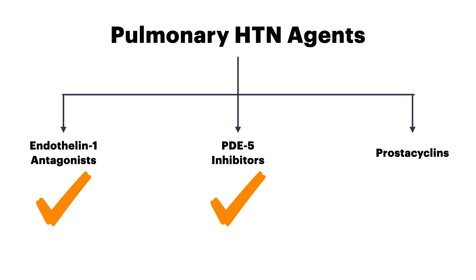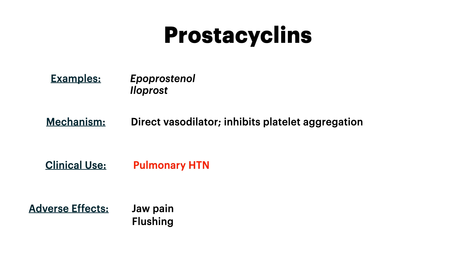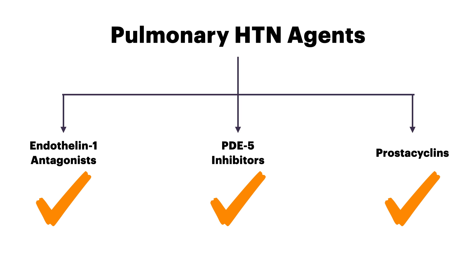Prostacyclins are our last category of pulmonary hypertension agents — honestly lower yield compared to endothelin-1 blockers and PDE5 inhibitors. The examples are epoprostenol and iloprost. They all have "prost" in the name, so you'll remember they're prostacyclins. The mechanism is that these are direct vasodilators that also inhibit platelet aggregation. Just like the other two groups, you use these in pulmonary hypertension. Adverse effects include jaw pain — which is unique, so know that — and flushing, because this is a direct vasodilator.